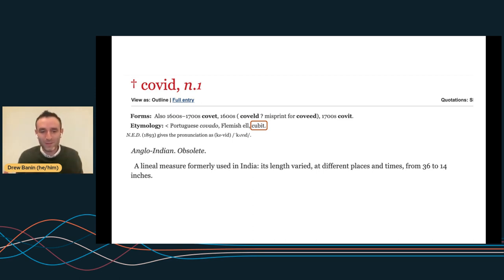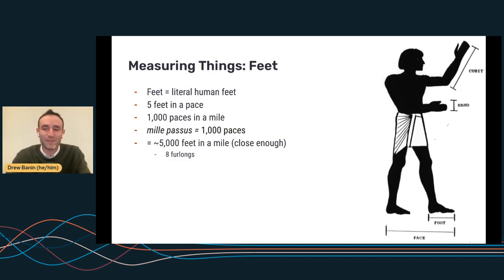So we're going to bring it back to measurement. The thing to call out here is a cubit, depending on who you ask, is between 14 and 36 inches. So there are small or long arms, depending. And this isn't the only body part that we use to measure things.